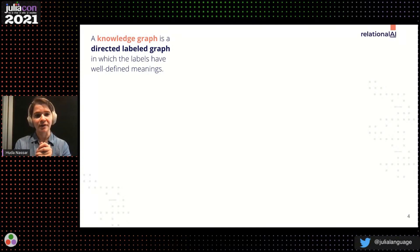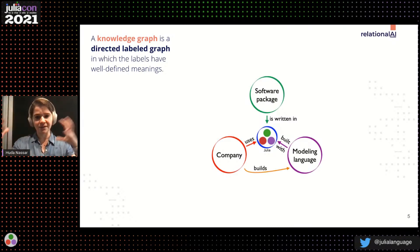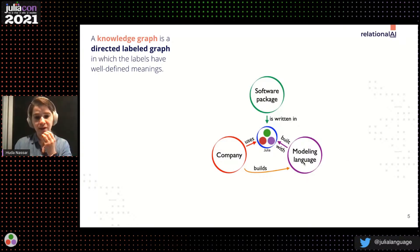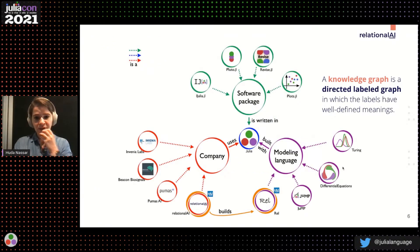Starting with knowledge graphs — by the classic definition, a knowledge graph is a directed labeled graph in which labels have a well-defined meaning. Let me introduce a diagram that should be familiar to many in the Julia community: a schematic modeling a certain world. You can see software packages written in Julia, a company using Julia, and a company building a modeling language — which is what we do at Relational AI. We call this a schema, and from this schema you can construct a knowledge graph.